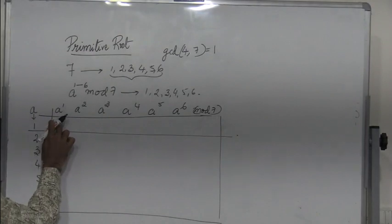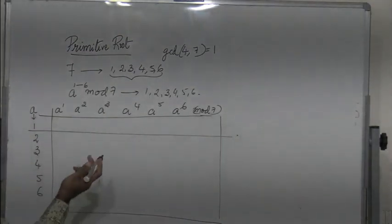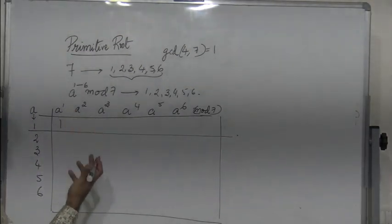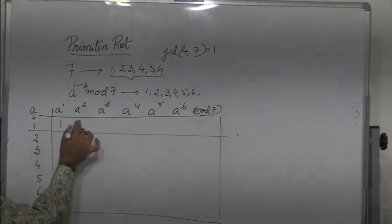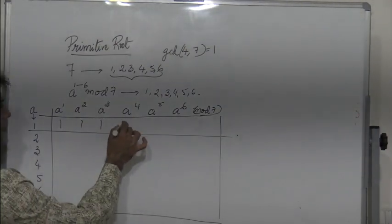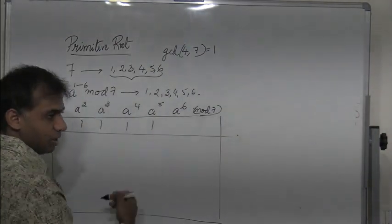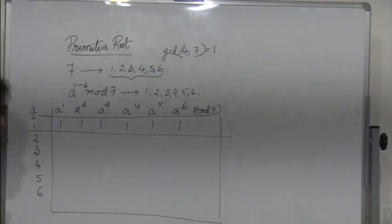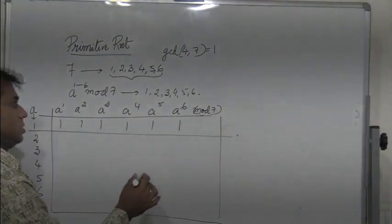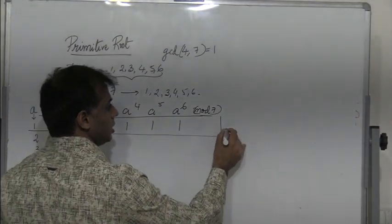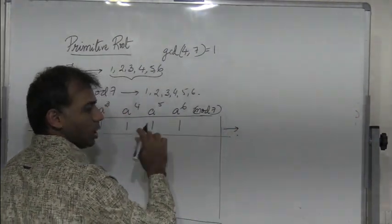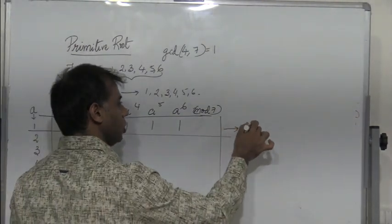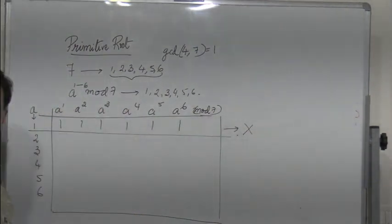For a=1: 1 to the power 1 in mod 7 is 1, 1 to the power 2 is 1, power 3 is 1, power 4 is 1, 1 to the power 5 is 1, and 1 to the power 6 in mod 7 is 1. We only get 1, so therefore 1 is not a primitive root of 7.